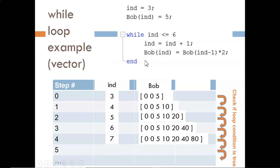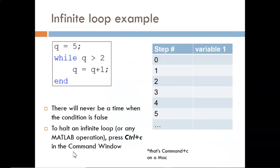Thank goodness these examples only have a few iterations through the loop. Some loops may iterate thousands of times. And other loops never end. Here is an obvious example of an infinite loop. Q starts at 5. 5 is bigger than 2, so we enter the loop. Each time we do, Q gets larger and larger.